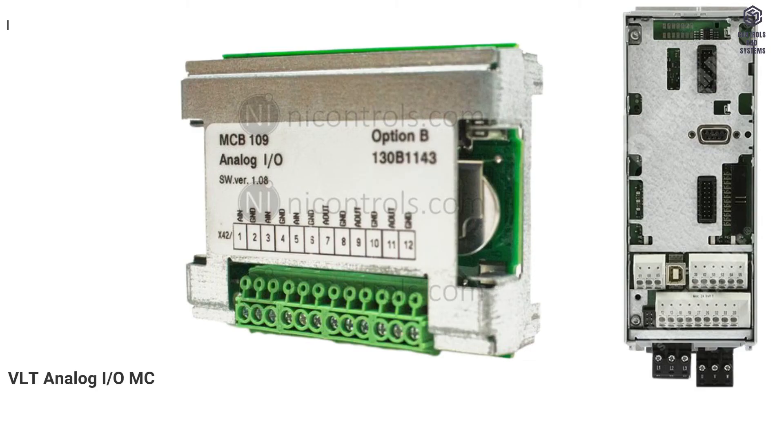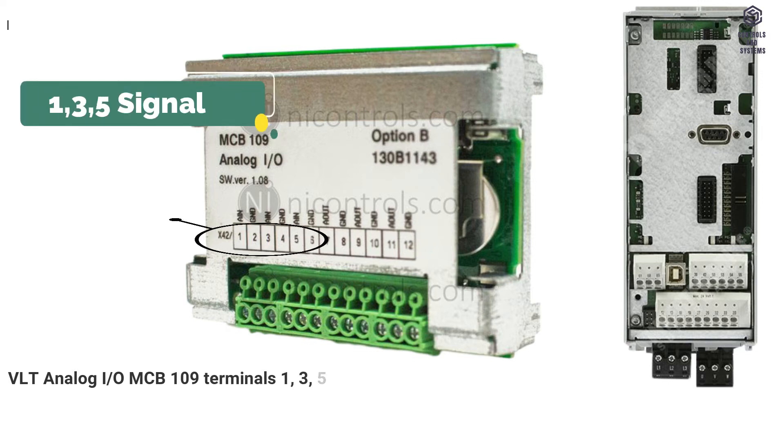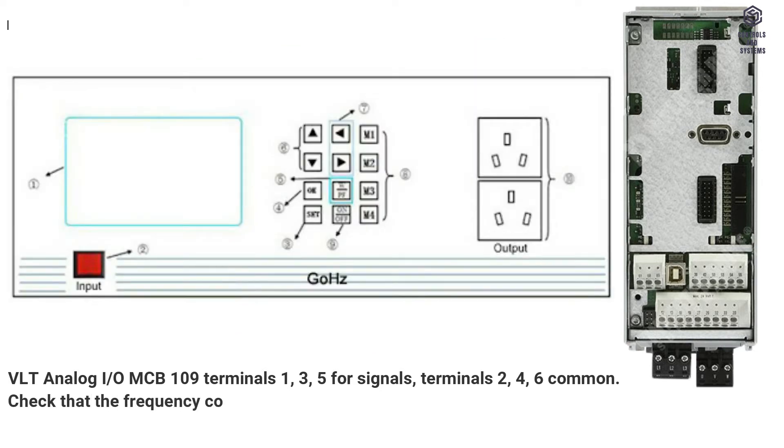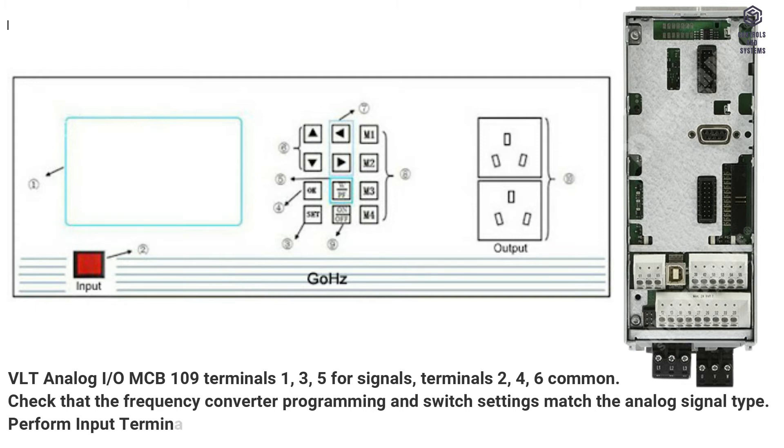VLT analog I/O MCB 109 terminals 1, 3, 5 for signals, terminals 2, 4, 6 common. Check that the frequency converter programming and switch settings match the analog signal type. Perform input terminal signal test.